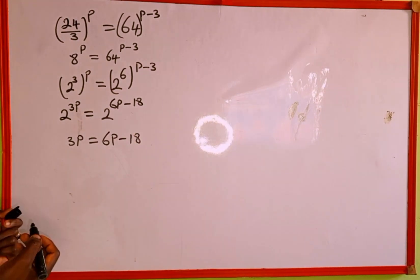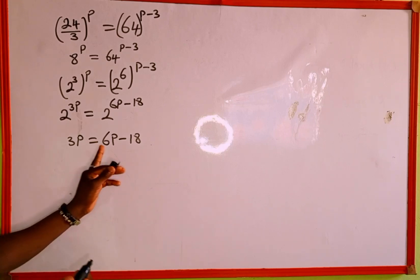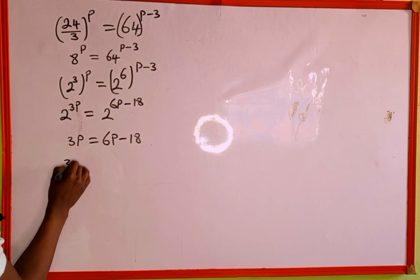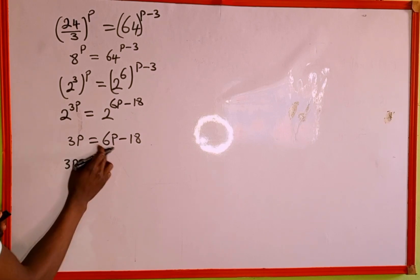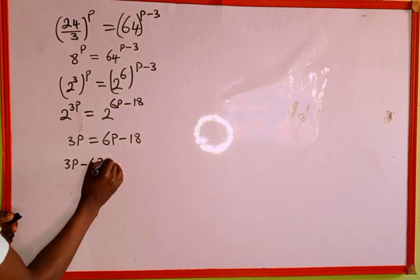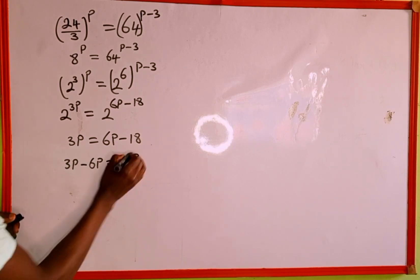Now we're going to solve for the value of p. First, we combine like terms. We take this 6p to the left hand side of the equation. We have 3p, which is positive, and when it crosses the equality sign, it becomes negative 6p, which equals negative 18.